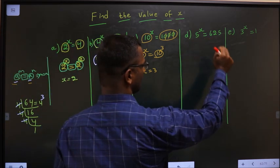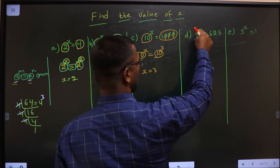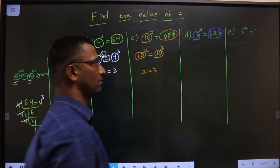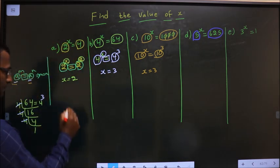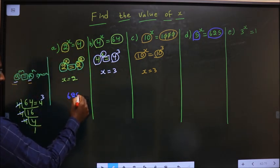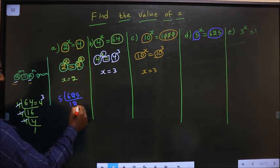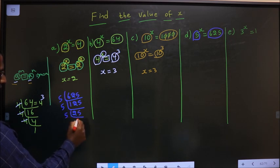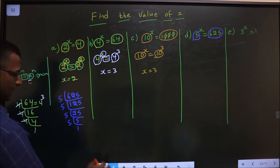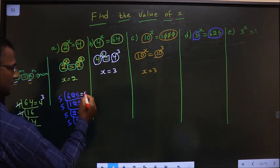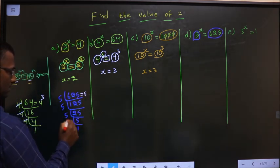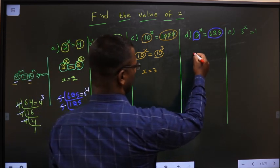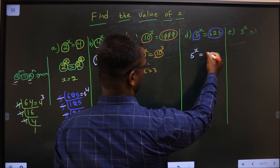Next problem: 5 power x equal to 625. The observation is base is 5. So make the base 5 on the right side too — take the LCM of 625. 5 into 125, 5 into 25, 5 into 5, 5 into 1. So 625 is nothing but 5 power 4.